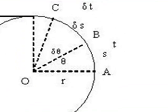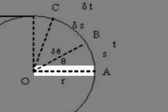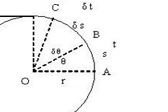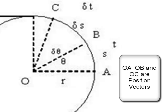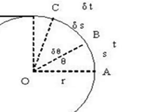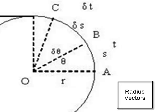Suppose the body starts from A and in time T it moves to B. If O is the center of the circular path, then it can be considered as the origin of the coordinate system. OA is the position vector of the body when it is at A. Similarly, OB is the position vector when it is at B. Vectors OA, OB, and OC represent position vectors at A, B, and C respectively. These position vectors are also called radius vectors.